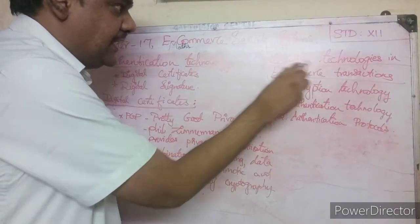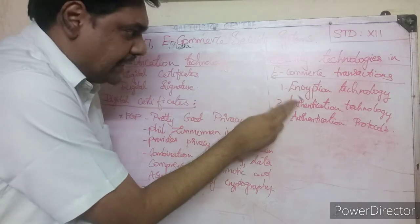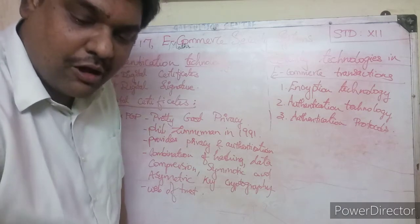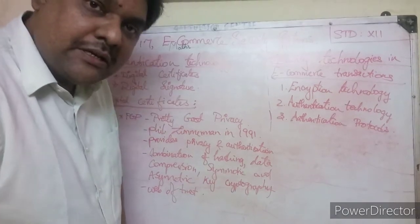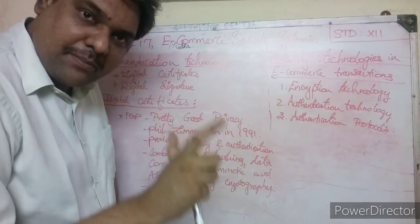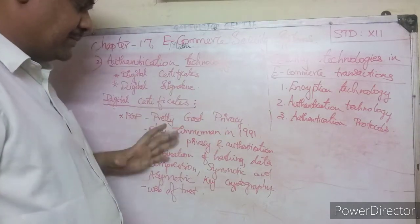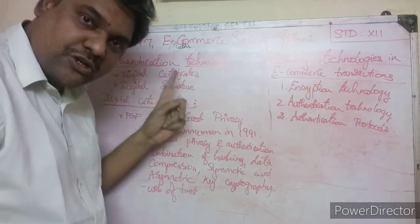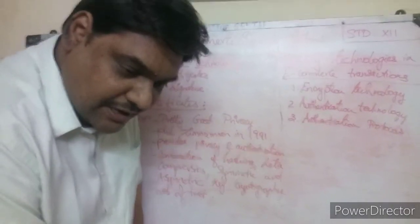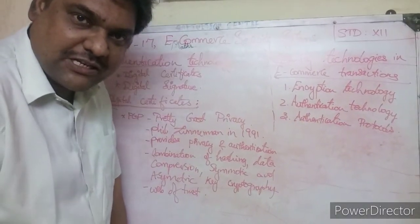In e-commerce security technologies, last session we saw about encryption technology. Now we are going to see about authentication technology. Authentication is about verifying that data is genuine and correct. Authentication technology involves two technologies: one is digital certificate and digital signature.